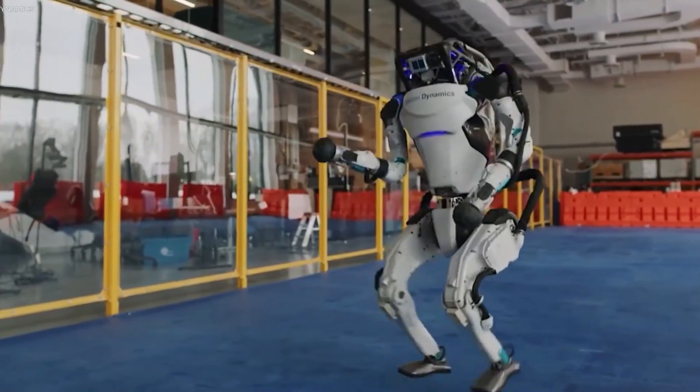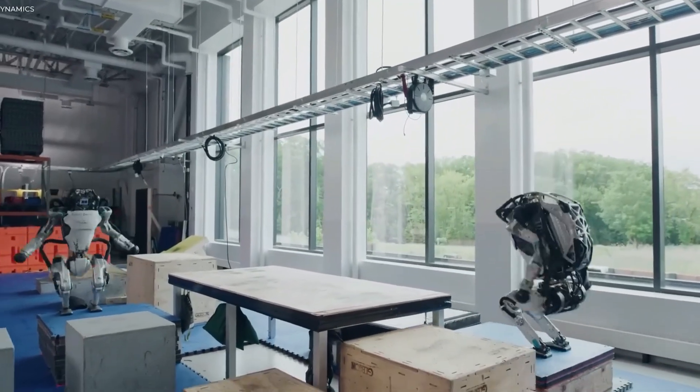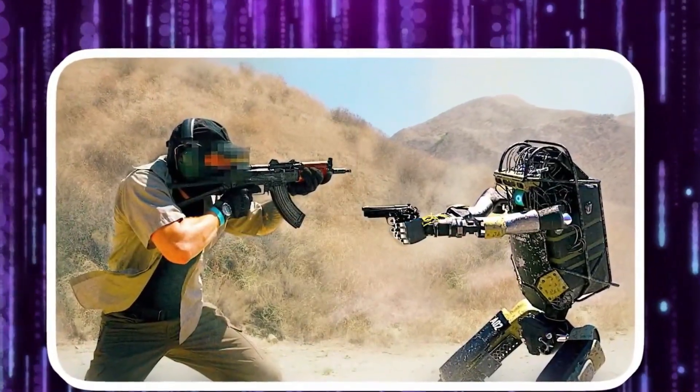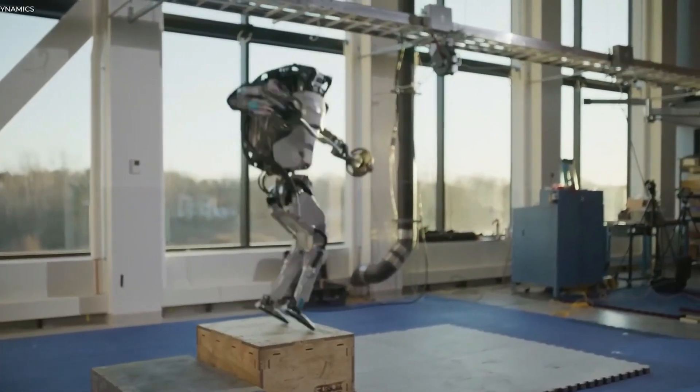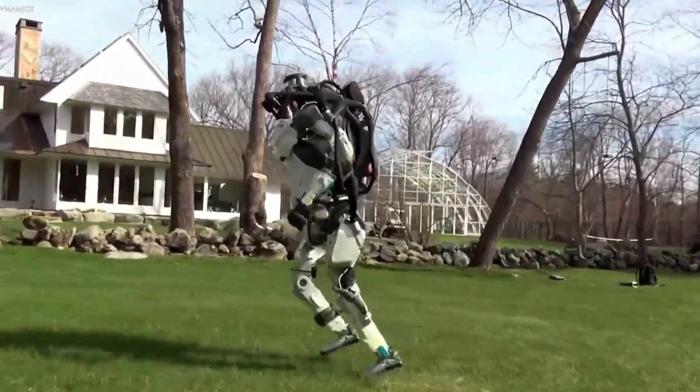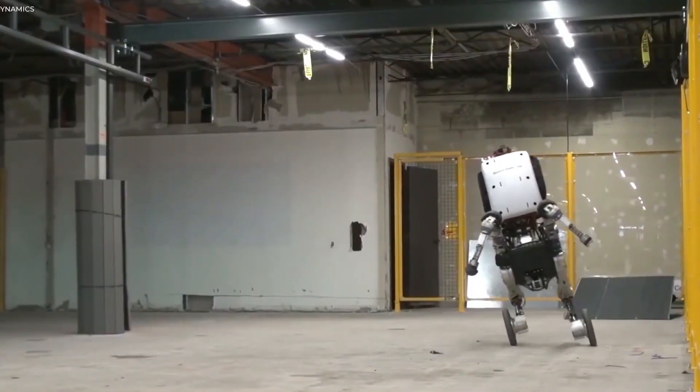Boston Dynamics Atlas has amazed the world with its remarkable abilities. It can perform incredible feats like backflips, dancing, running, and even assisting construction workers. The range of actions it can perform goes beyond what was thought possible for robots. As we await NIO's physical embodiment, it will be fascinating to see how its actual movement and walk cycle compare to the astonishing capabilities of Atlas.